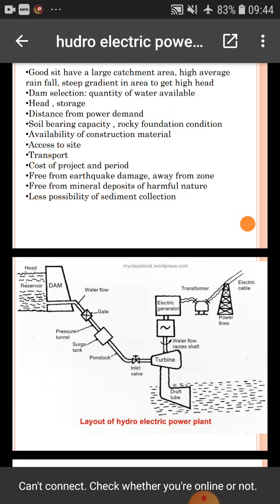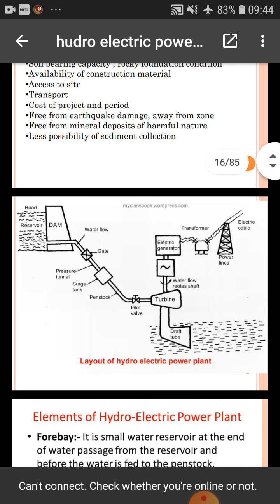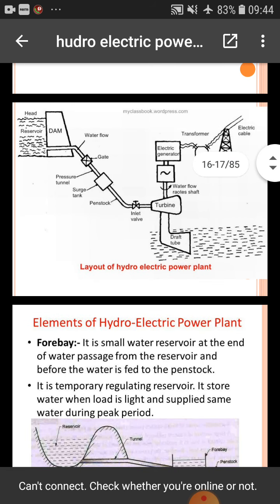This is the layout of a hydroelectric power plant. Water comes from the dam through a penstock to the turbine. The turbine is connected to the generator, which transfers electricity to a transformer, which is connected to the distribution system. Water is removed from the turbine through a draft tube back to the river.